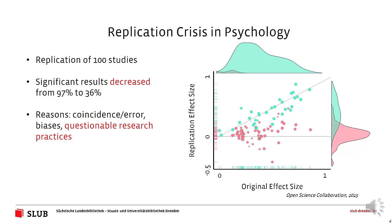A number of reasons have been suggested — part of that will be coincidence and error, but that should only account for about five percent. So there are things like biases and questionable research practices that we need to be aware of. By questionable research practices, I do not mean deceptive or fraudulent in any way — these are processes that can happen very much implicitly and subconsciously.